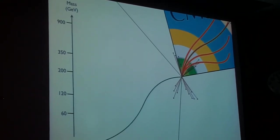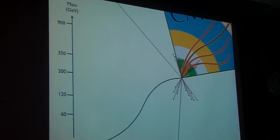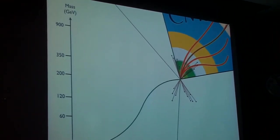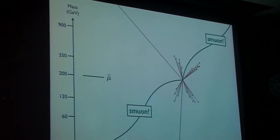...and momentum information from the bending, you would determine this doesn't really look like a good muon. It seems to be too heavy. This can't be a muon. In fact, what you've discovered is the supersymmetric partner of the muon, the smuon.